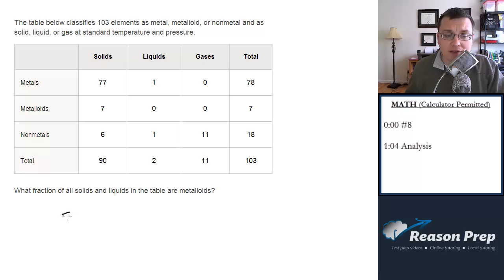So to get our fraction we have to figure out first the total number of solids and liquids, and then on top we're going to have the solids and liquids that are metalloids. And this will give us the fraction of our solids and liquids that are metalloids.